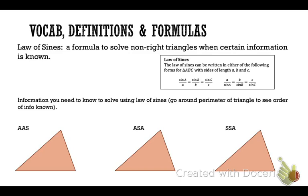In a minute, we'll look specifically at the formula. The information that we can know about a triangle is shown in the graphic below. If we know two angles and a non-included side, two angles and an included side, or two sides and a non-included angle, then we can use the law of sines to solve it.